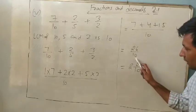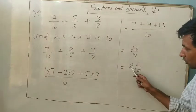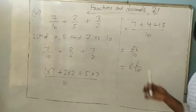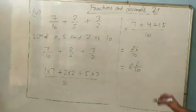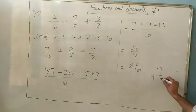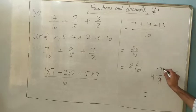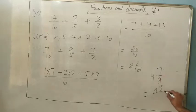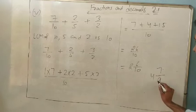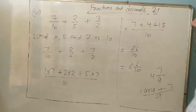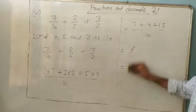How to convert a mixed fraction back to an improper fraction: for example, 2 and 6/10 — multiply denominator 10 by whole number 2 to get 20, then add numerator 6, giving 26/10. Another example: 4 and 7/9 — multiply 9 × 4 = 36, add 7 = 43, giving 43/9. You can also write it as (9×4 + 7)/9. This was already covered in seventh class.